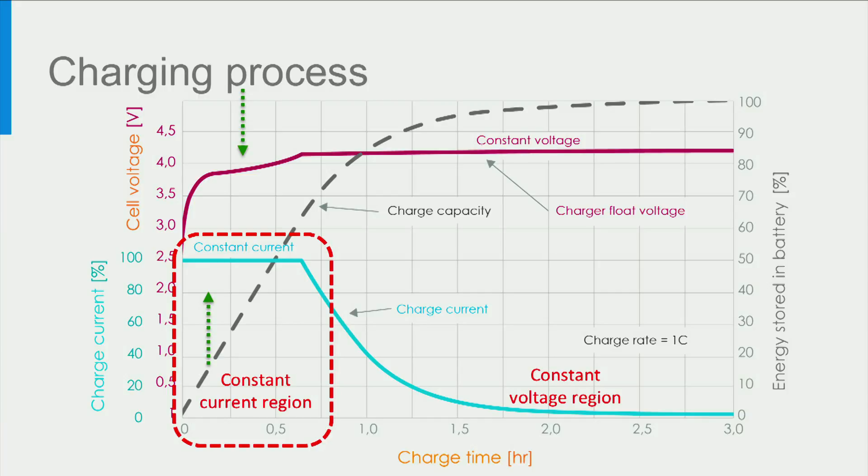During this period, the voltage of the battery increases as the battery gets charged. This is referred to as constant current or CC charging region. Fast charging is done in this CC region.